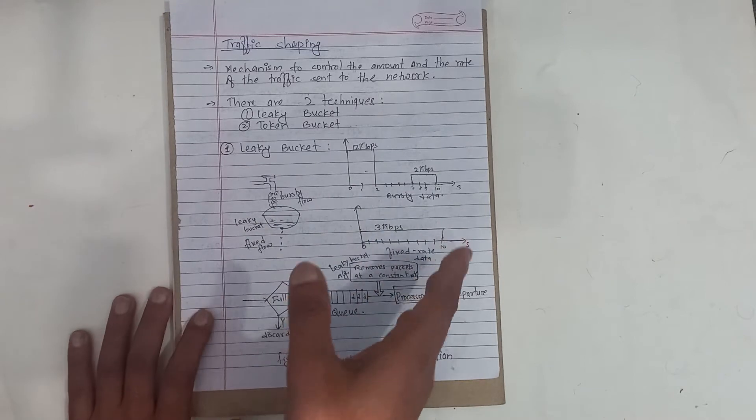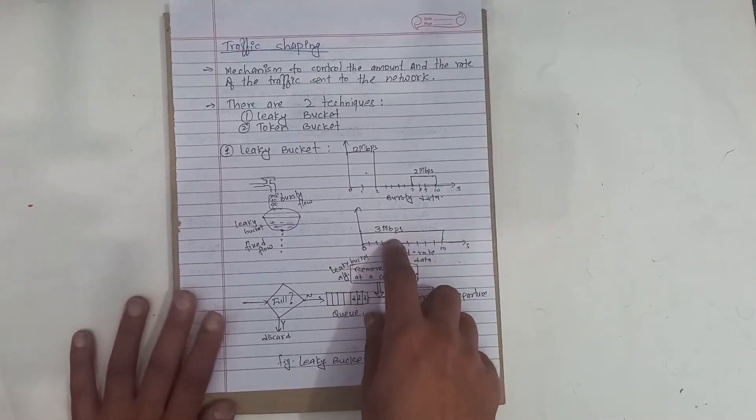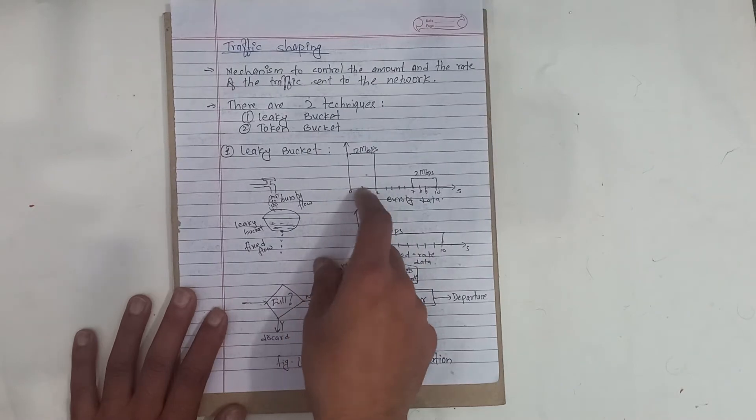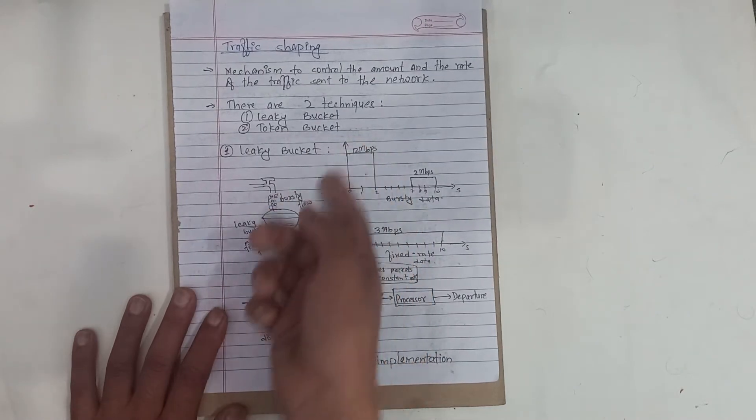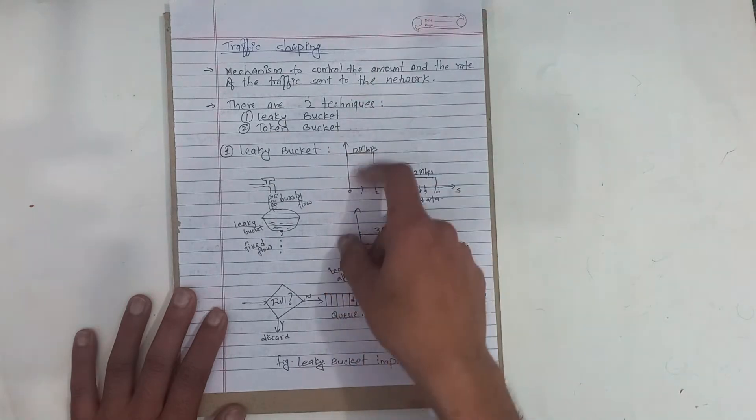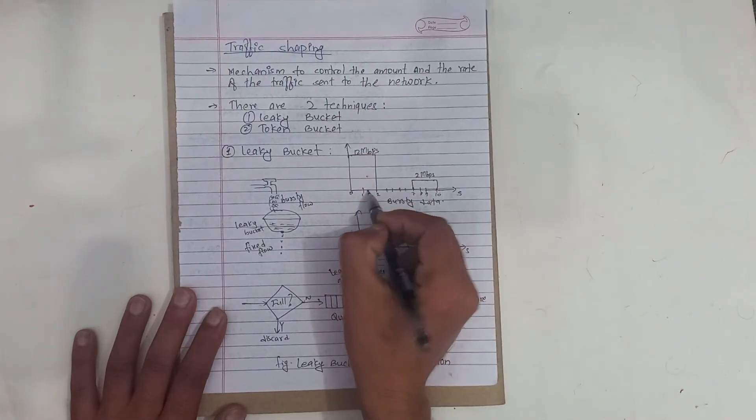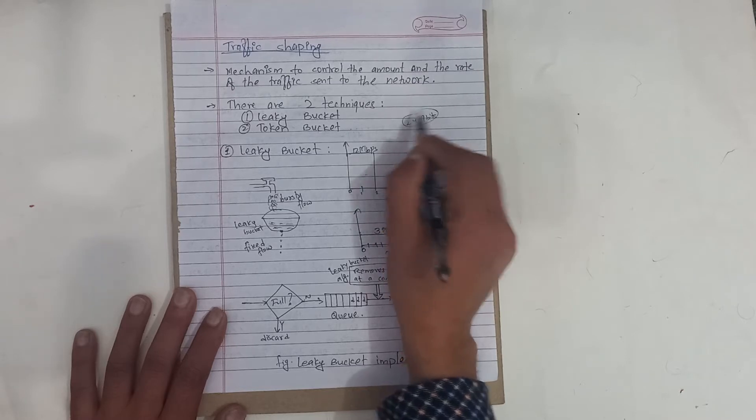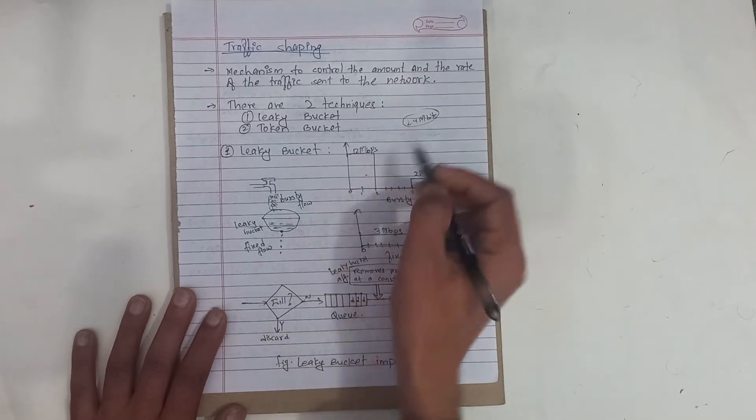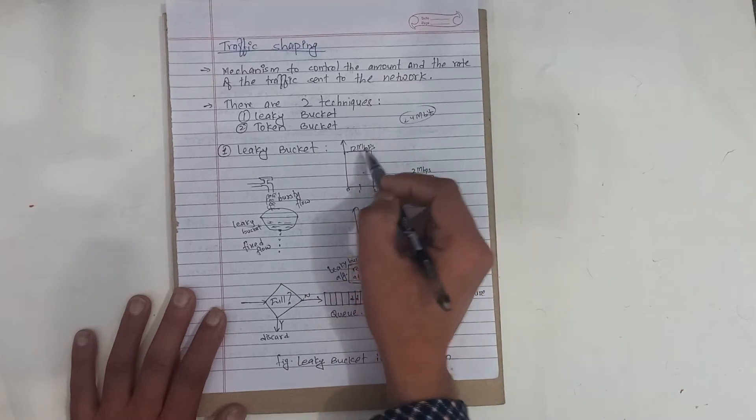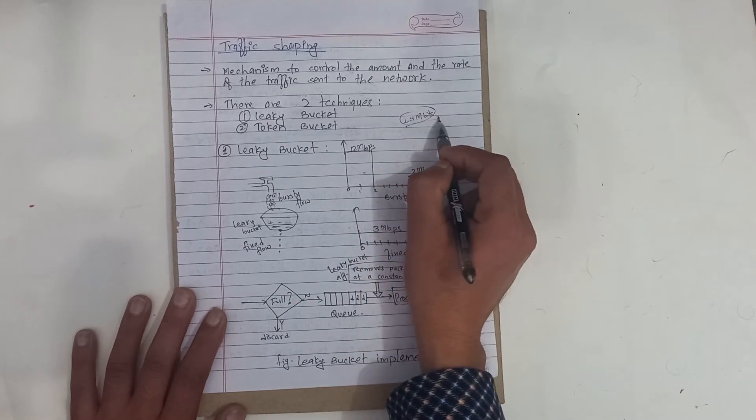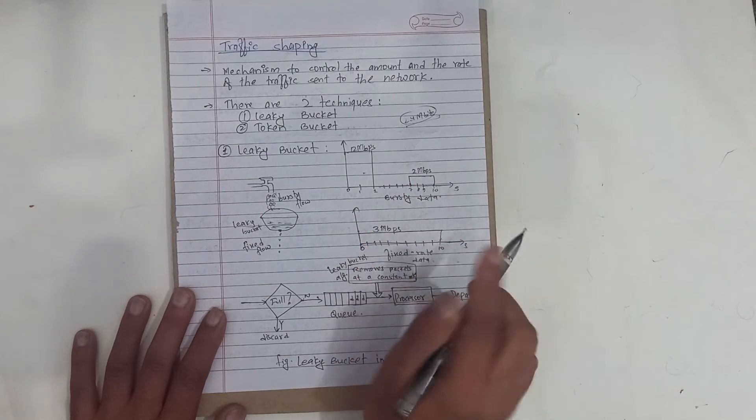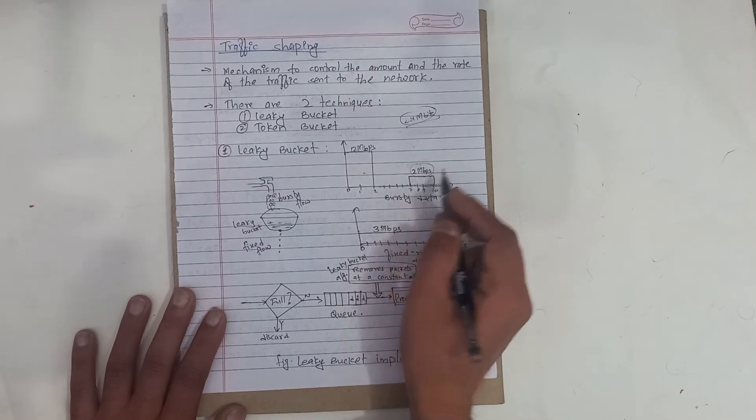So in the network, each host is allocated 3 Mbps, but what if the host needs more? In 2 seconds, we have 12 Mbps data to send. In 2 seconds, that's 12 Mbps times 2, which is 24 Mbps. In 5 seconds, we have 2 Mbps.